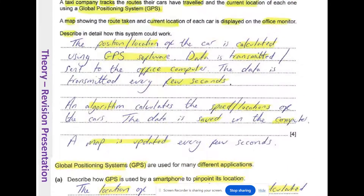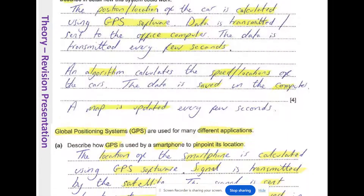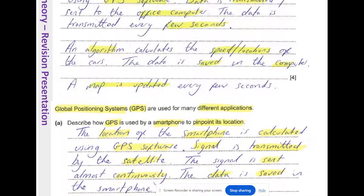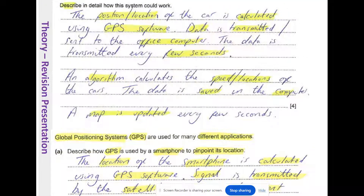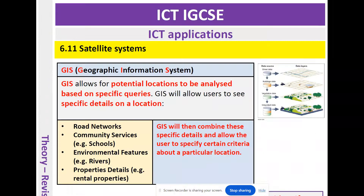Some aspects are quite similar across both answers: GPS software is used, the data signal is transmitted to the satellite, and eventually that information is shown on the screen.